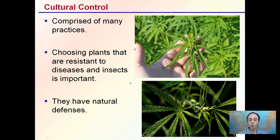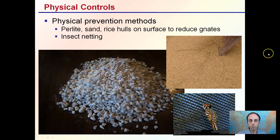Cultural control involves sacrificing certain practices but choosing plants that are resistant to disease and insects is important, as they may have natural defenses. Learning a cultivar is very important for an area — knowing what might be more resilient to certain diseases or common pressures is also good information to document.